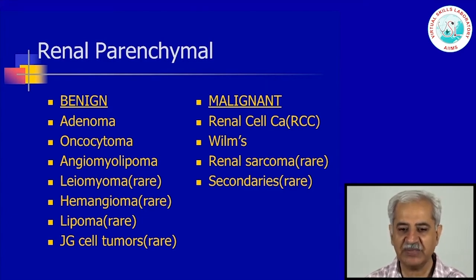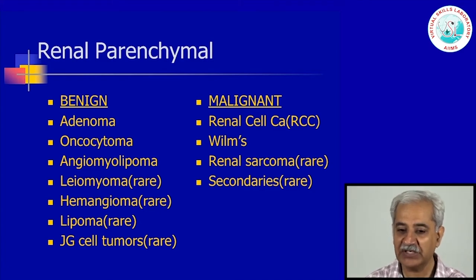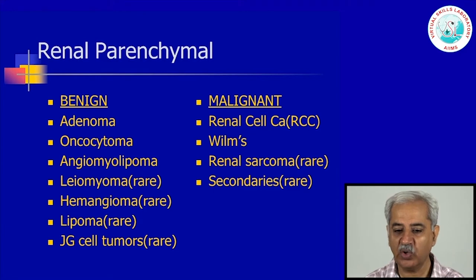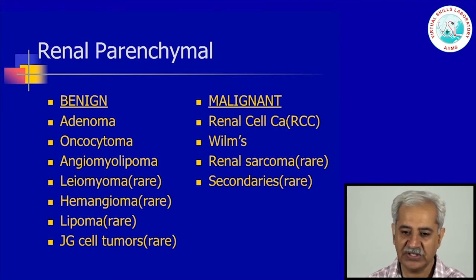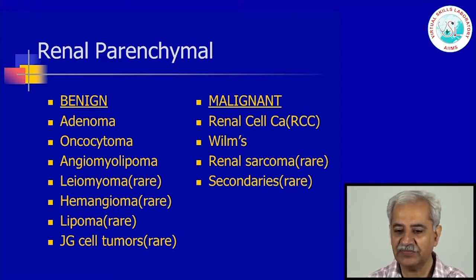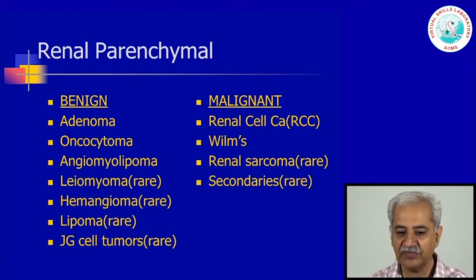The list of the various types of renal parenchymal tumours is long. The benign ones include adenoma, oncocytoma, angiomyolipoma, leiomyoma, hemangioma, lipoma, and JG cell tumours. The malignant ones are renal cell carcinoma, Wilms tumour, renal sarcoma, and secondaries. Importantly, malignant tumours are significantly more common than benign tumours — more than 90 percent are malignant. So based on imaging alone, if there is a solid tumour, it is presumed to be a malignant renal tumour.